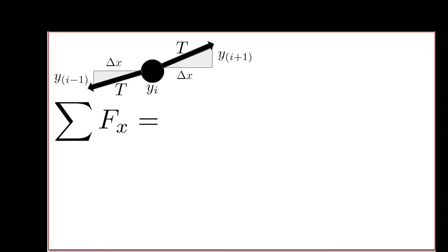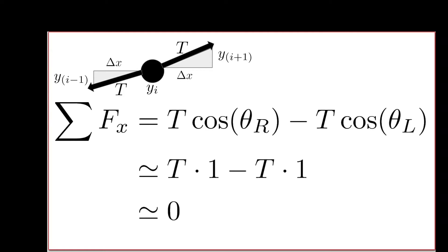If we sum the forces, applying Newton's second law, taking the net force in the x direction, we have tension times cosine theta_R pulling to the right, minus tension cosine theta_L pulling to the left, using the convention that right is positive and left is negative. Substituting in our small angle approximation, we see that this is T times 1 minus T times 1, which is 0. So this particle is not going to accelerate left and right.